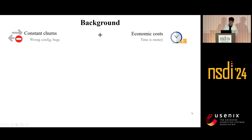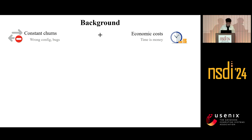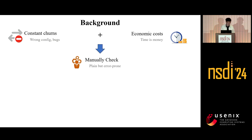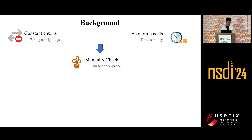The background is that with the gradual expansion of computer networks, network errors caused by misconfigurations, hardware and software errors cannot be avoided. These network errors can cause significant economic losses and social impacts. When such network errors occur, we naturally rely on humans for manually troubleshooting, but this approach is prone to introducing new problems due to manual errors.